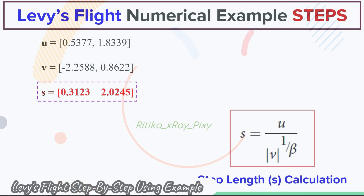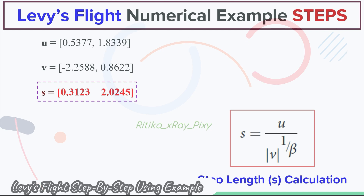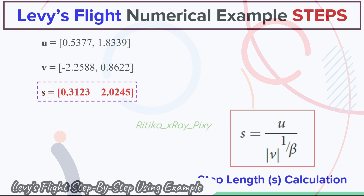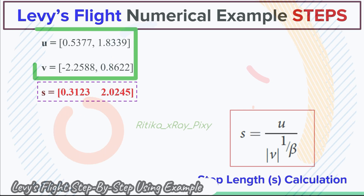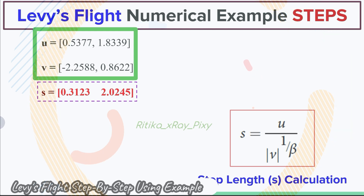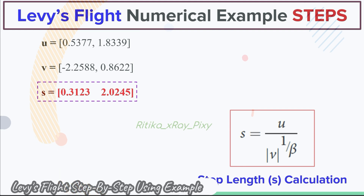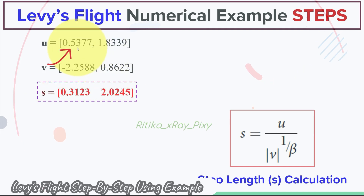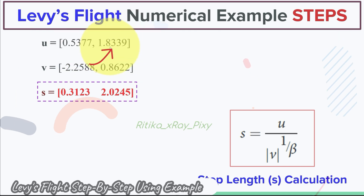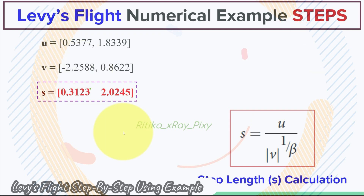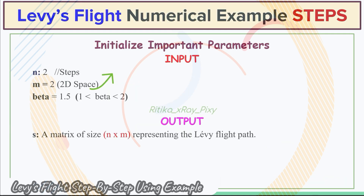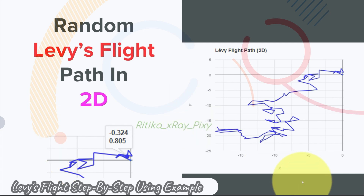Now we calculate the step length. u and v are normally distributed, where each u has a mean of zero and standard deviation of sigma_u. In Lévy's flight there are two important phases: first, select the random direction; second, generate the step that follows Lévy distribution. u represents the random jump distance and v represents the random direction modifier. Since we are in 2D space, we have two values for u and two values for v.